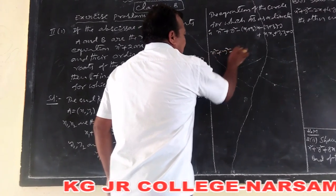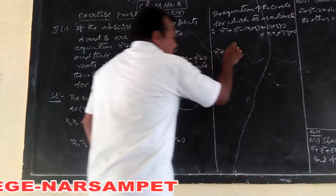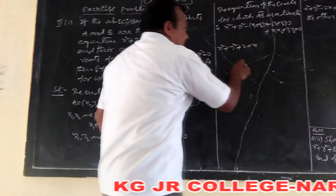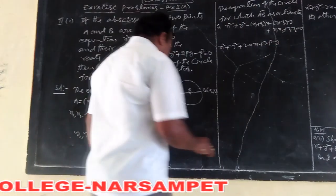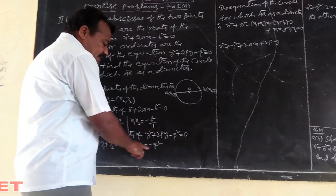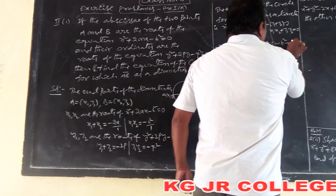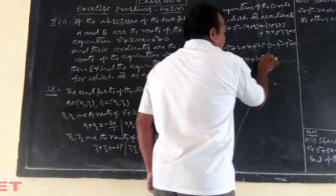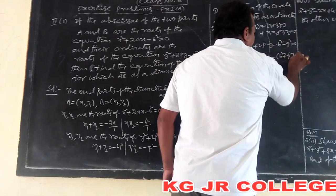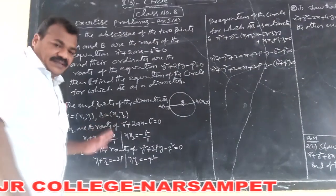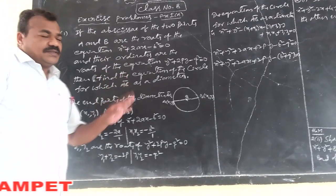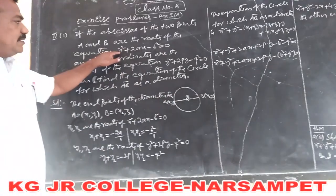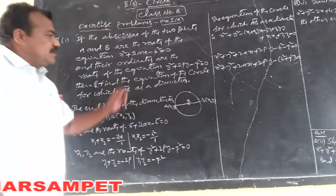Therefore: x² + y² − (−2a)x − (−2p)y + (−b²) + (−q²) = 0, which simplifies to x² + y² + 2ax + 2py − b² − q² = 0. This is the process to find the circle equation when the end points of the diameter have abscissas and ordinates that are roots of given quadratic equations.